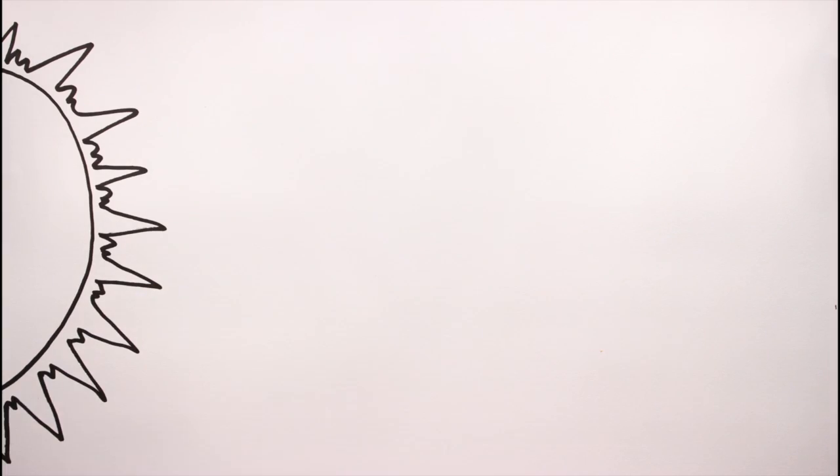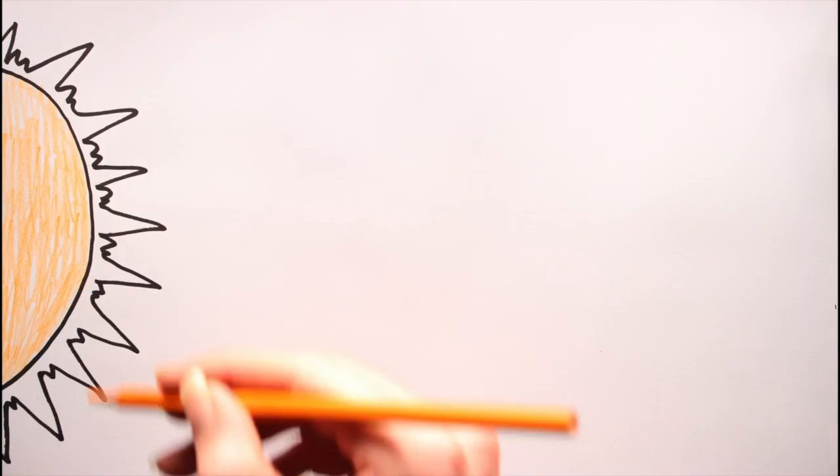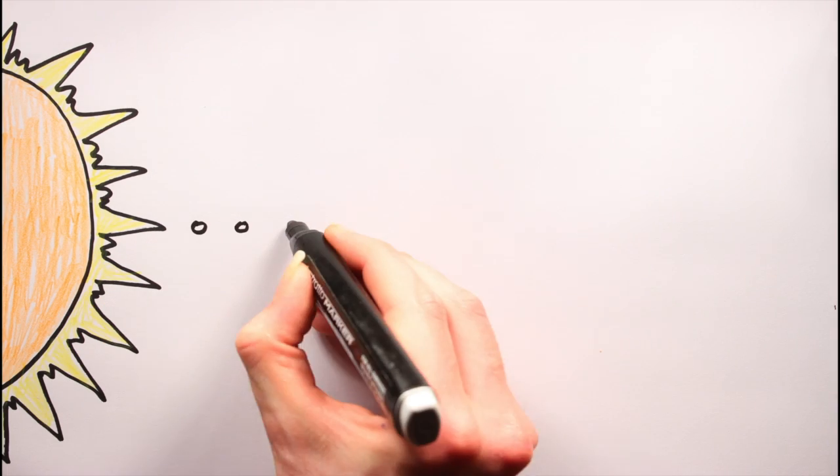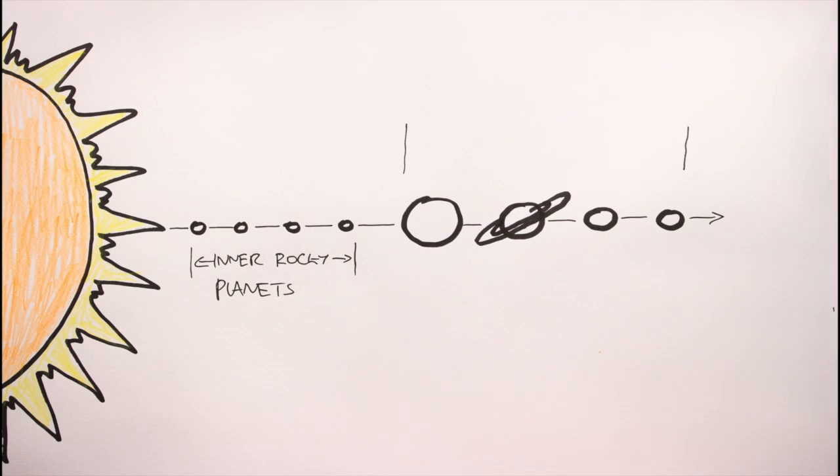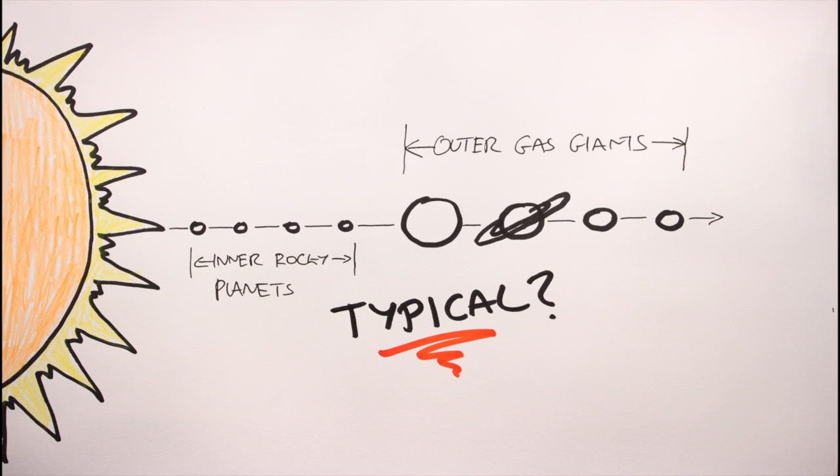So, back in the long, long ago of the early 90s, astronomers believed, and justifiably so, that our solar system was a typical planetary system: small rocky planets on the inside and large gas giants on the outside, all orbiting a single low-mass star.